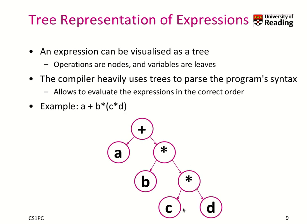So, how do we construct something like this? Well, c times d has precedence over the additional multiplication. So we start here as a leaf, c times d. This result then should be multiplied with b, and then to this result we have to add a. That's basically our tree representing this expression.